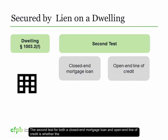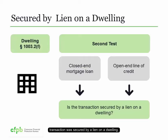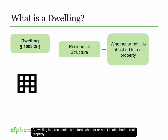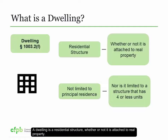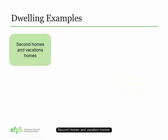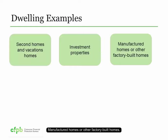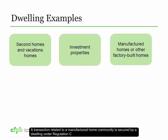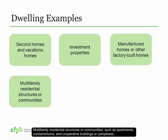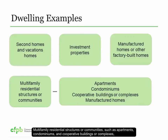The second test for both a closed-end mortgage loan and open-end line of credit is whether the transaction was secured by a lien on a dwelling. A dwelling is a residential structure, whether or not it is attached to real property. A dwelling is not limited to a principal residence, nor is it limited to a structure that has four or fewer units. Here are some examples of dwellings: second homes and vacation homes; investment properties; manufactured homes or other factory-built homes. A transaction related to a manufactured home community is secured by a dwelling under Regulation C, even if it is not secured by individual manufactured homes, but only by the land that constitutes that manufactured home community, including sites for manufactured homes. Multifamily residential structures or communities, such as apartments, condominiums, and cooperative buildings or complexes, or manufactured homes.